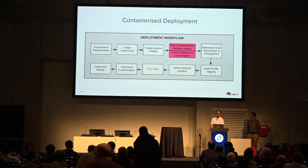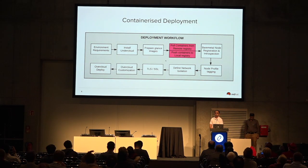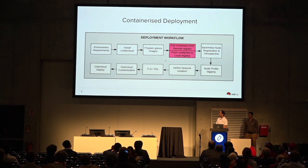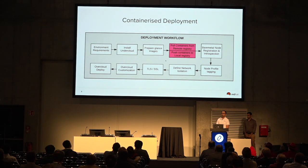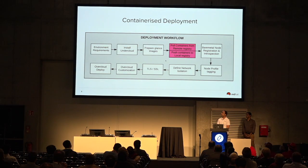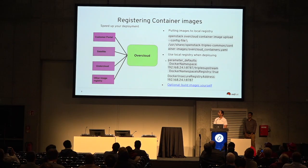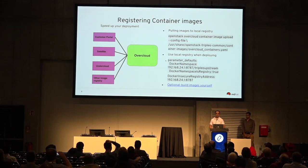A quick look at the deployment workflow. All the containers require a registry to pull images from. The overcloud connects to the remote registry and pulls images directly on each node, which requires a lot of network bandwidth and an Internet connection for all nodes. Instead, we use a local registry that syncs all containers from a remote registry, speeds up deployment, and decreases network congestion.